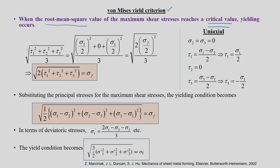The von Mises criterion is: sqrt[(tau_1² + tau_2² + tau_3²) / 3] = critical value. To find the critical value we again use the uniaxial tensile test condition where sigma_2 = sigma_3 = 0. Then tau_1 = sigma_1/2, tau_2 = 0, tau_3 = -sigma_1/2.